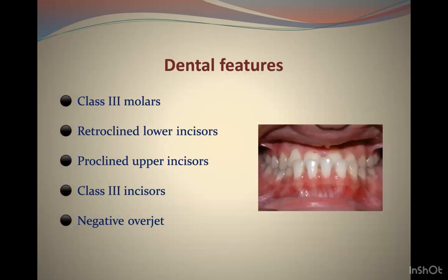The dental features include Class 3 molar and Class 3 incisor relationships. The lower incisors are usually retroclined, the upper incisors are proclined, and there is a negative overjet.